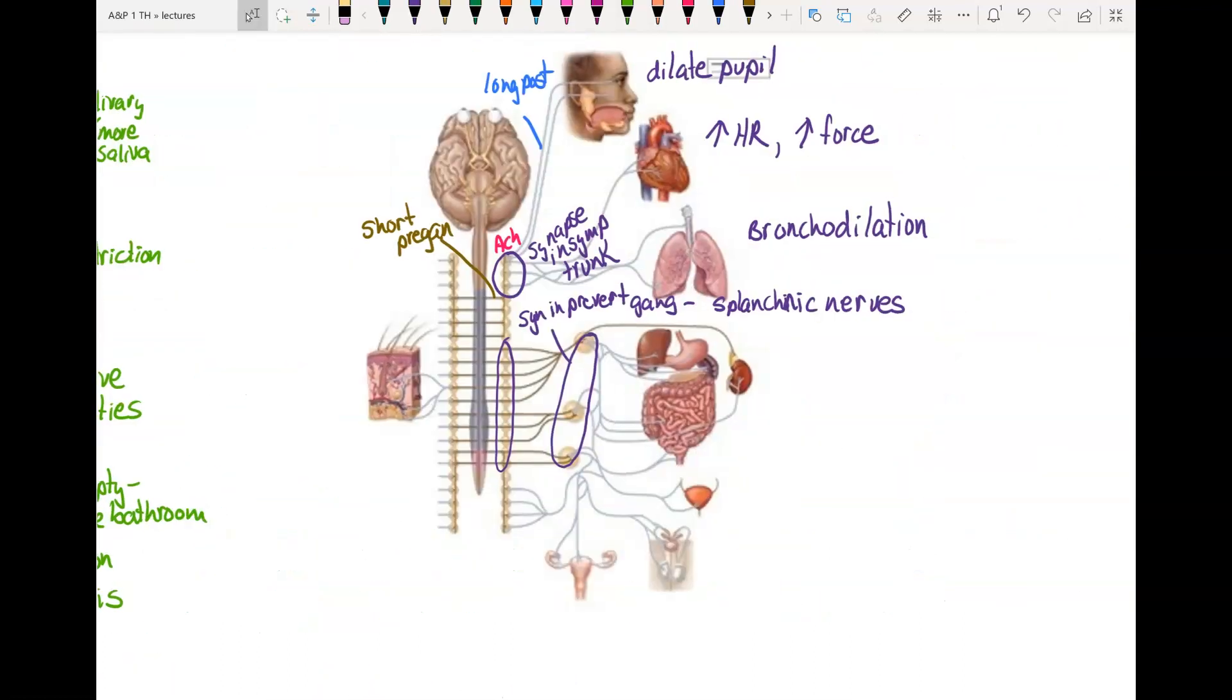Over here, we don't have the word pelvic. We just say splanchnic nerves. So when you just see the word splanchnic, no pelvic, it is sympathetic. And it means that they synapse in a prevertebral ganglion.